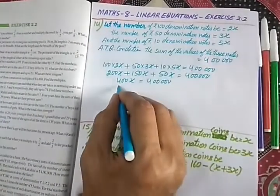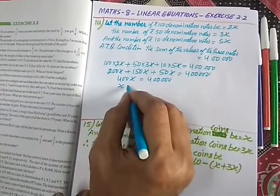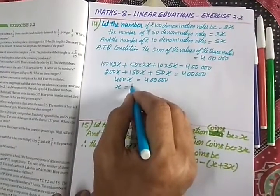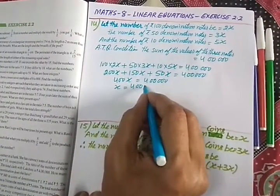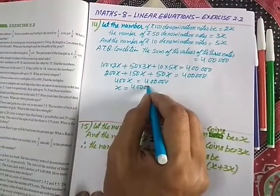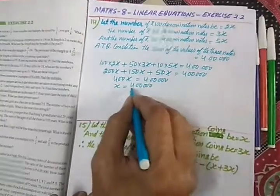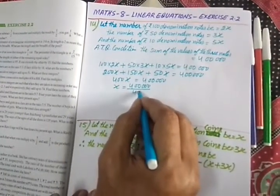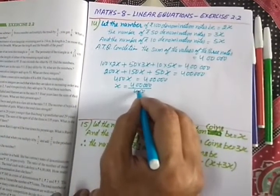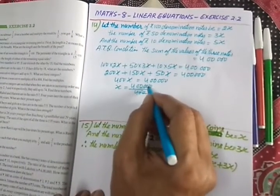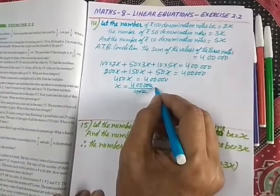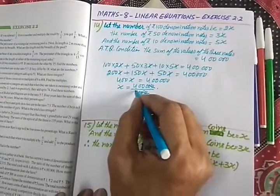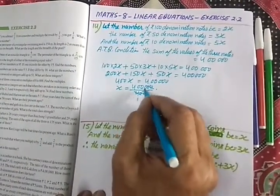That means x is equal to 4 lakh upon 400. When you cancel the two zeros, you get x equals 1000.